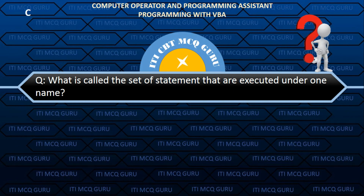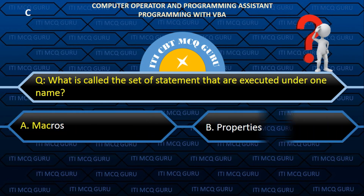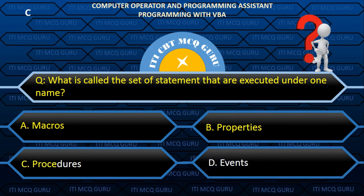What is called the set of statements that are executed under one name? Answer: C. Procedures.